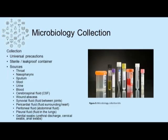Collection of microspecimens requires the use of universal precautions and collection in sterile and leak-proof containers. The various sources of microspecimens include throat swabs, nasopharyngeal swabs, sputum specimens, stool, urine, blood, and cerebral spinal fluid to check for the presence of meningitis. A wound abscess can be collected on various parts of the body.